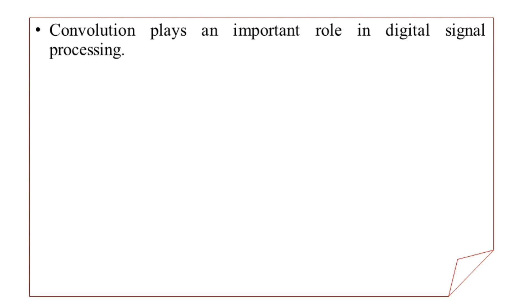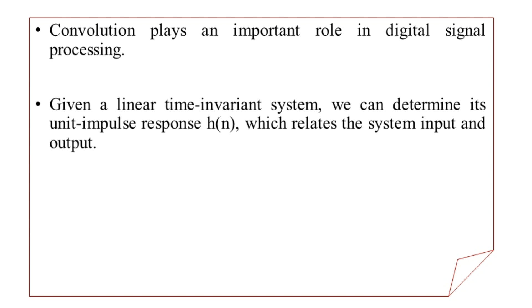For performing the convolution operation, along with the input discrete time sequence, we require another sequence as well. This sequence is called the unit impulse response, generally denoted as H of N. It is also named the unit type impulse response. When we are provided with an LTI system, we can determine the unit type impulse response H of N specific to that system. It basically relates the system input to the output, giving us information about how the LTI system will behave when a certain input sequence is provided.